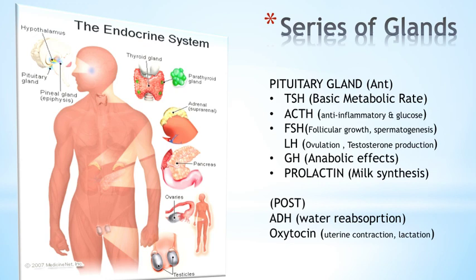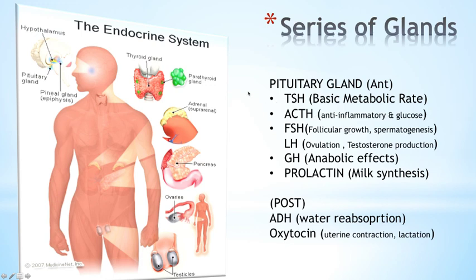Other glands include the pancreas, which produces insulin from its beta cells. Insulin has a key function in carbohydrate regulation — it tells the liver, muscle tissues, and other tissues to take up glucose. Another gland is the parathyroid gland, located on the thyroid gland, which produces PTH (parathyroid hormone) to increase calcium levels in the blood. This is in contrast to calcitonin, produced by the parafollicular cells of the thyroid gland, which acts to decrease calcium concentration.